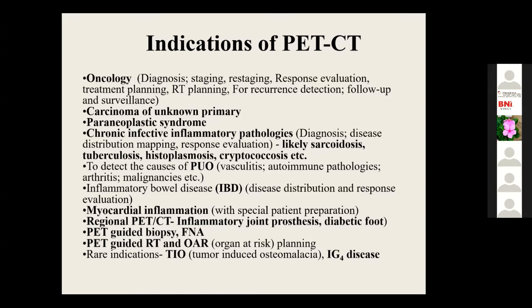Regarding how F18-FDG is eventually cleared: the FDG remains inside the cells. After the decay of F18, it is converted into O-18 and then into O-16, effectively becoming like a water molecule — a non-radioactive substance inside the cells. It remains inside after decaying.